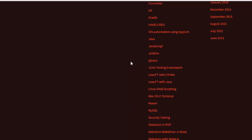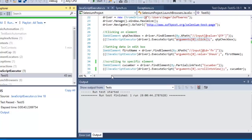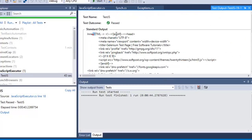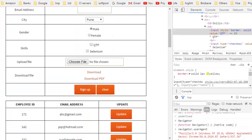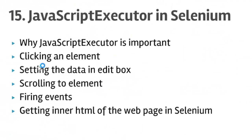The script entered the shown value and then scrolled to the cucumber link, and the test has finished executing. The output will also print the inner HTML of the page. That ends lecture number 15 on JavaScript Executor. In this lecture we have seen how to execute JavaScript: clicking elements, setting data in an edit box, scrolling, firing events, getting inner HTML, and executing any valid JavaScript in Selenium. Thanks for watching.